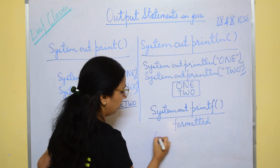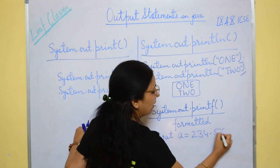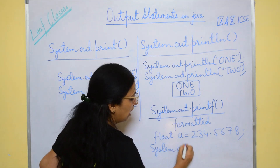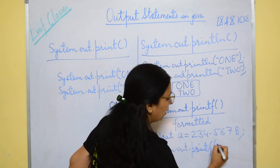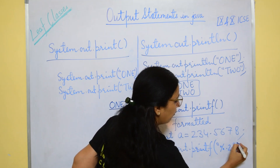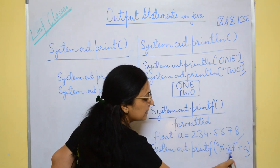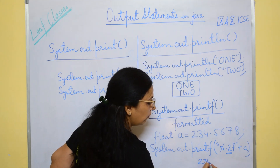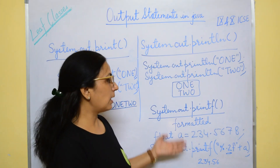For printf, it is used for formatted output. For example, if you have a float variable a equals to 234.5678, and you write System.out.printf with "%0.2f" plus a, the output will be formatted to 2 decimal places, giving 234.56. Different formatting options are available but we are not going to go into detail of printf.